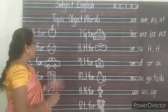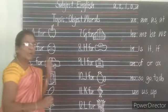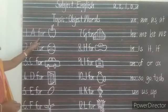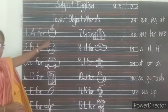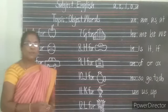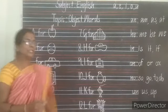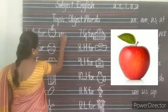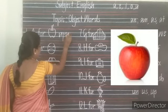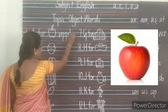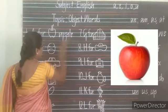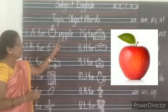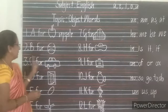Today's class we are going to learn objects. Okay? What is this picture? A-P-O — Apple. Spell it: A-P-P-L-E, Apple. A-P-P-L-E, Apple.